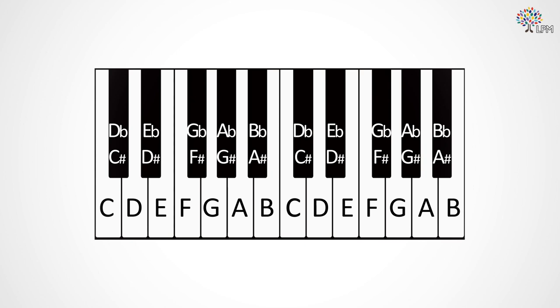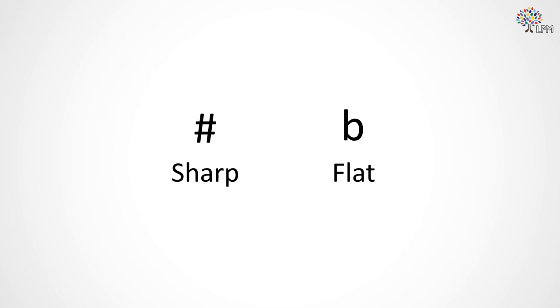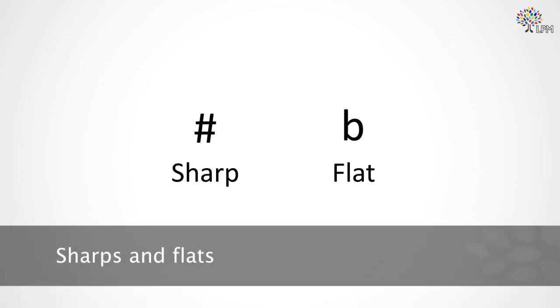And here are the keys with their labels. Notice how the black keys have two names. Because the white keys get the standard letter names, we use sharp and flat to get to the black ones. Yes, the sharp looks like a hashtag, and the flat looks like a weird B.